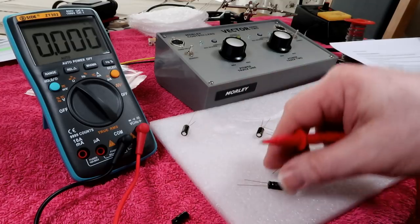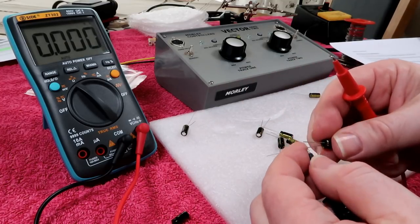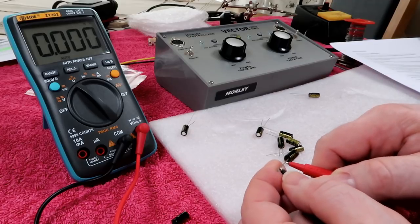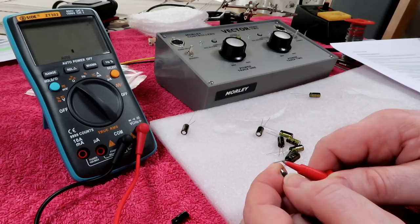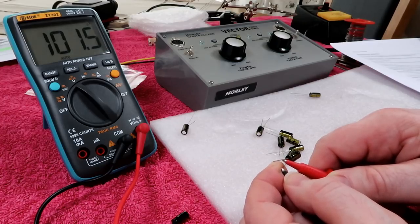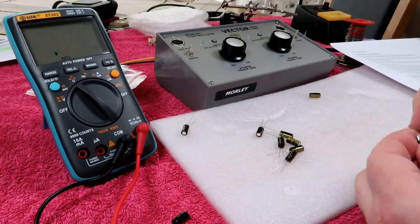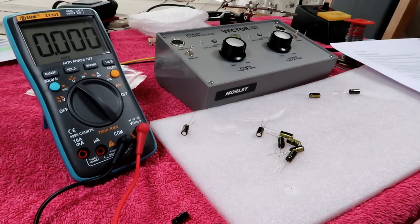And we just carry on until we find one which is of a similar value to what we've had, making sure that your fingers don't come into contact with both leads at any one time. See, that's 101, so that's higher than the first one we tested. This is boring, so I'm going to find them and then come back and tell you what's happening.